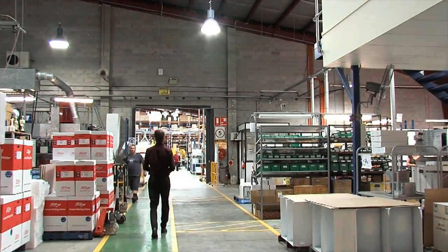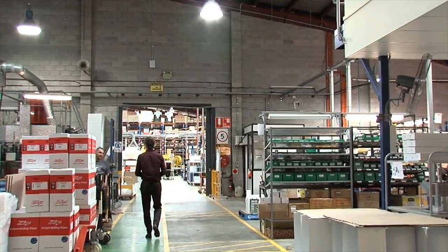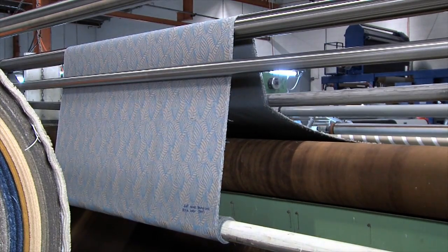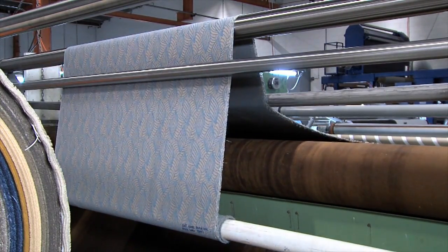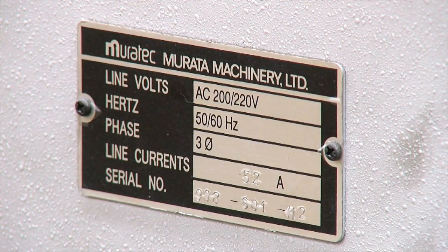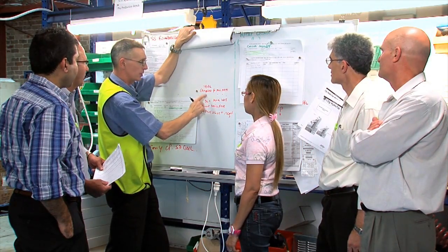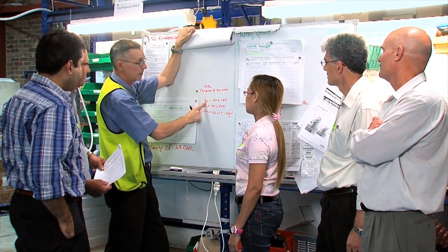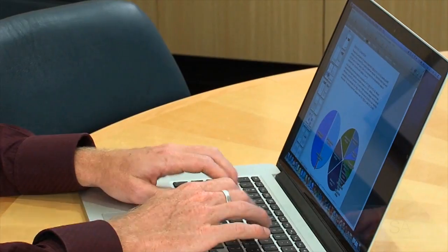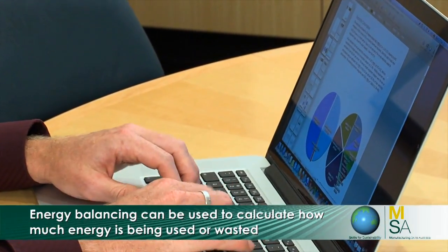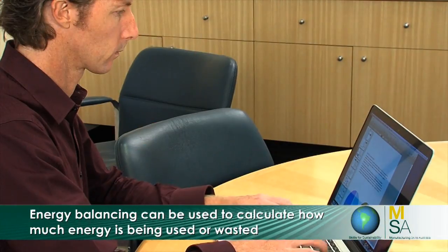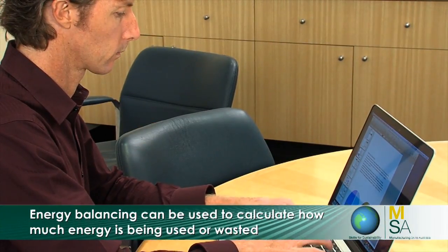Simple calculations will often be enough to see where the big energy use is and to see whether your changes make a difference. This piece of equipment is rated at this many kilowatt hours; we use it this many hours a day for this many days a year. You can factor in more details about the energy system and the calculations become more complex. These are often called energy balancing and can be used to calculate how much energy is being used or wasted.